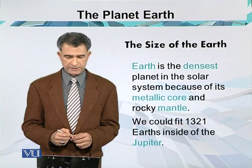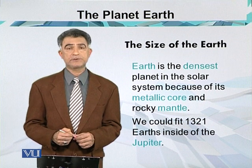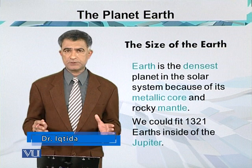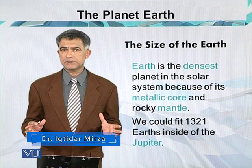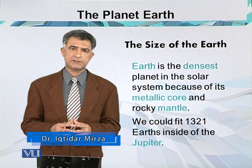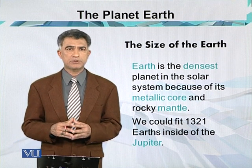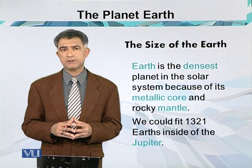Earth is the densest planet in the solar system because of its metallic core and rocky mantle. The surface of the Earth is covered with the crustal area called the Earth's crust, but below the surface we have mostly liquid and solid parts.